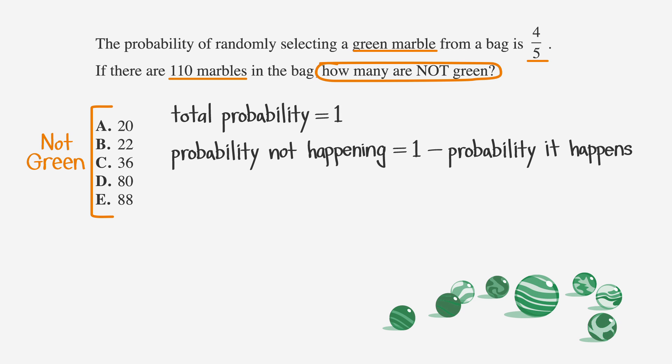In this case, the probability of not grabbing a green marble is 1 minus 4/5, or 1/5. To figure out how many non-green marbles are in the bag, we just multiply 1/5 by the total number of marbles, which is 110, to get 22 or answer choice B.